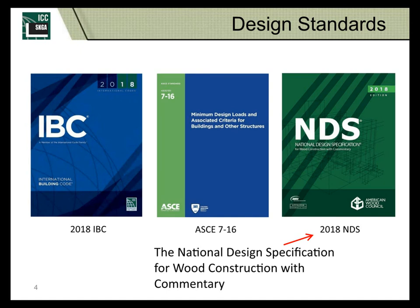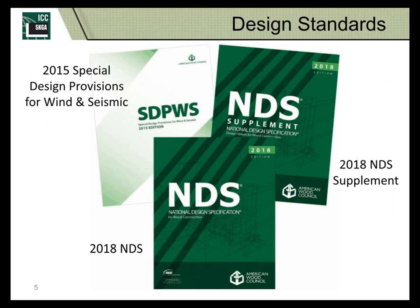We don't quite yet have the next edition of the IBC adopted by jurisdictions, but it's just around the corner. The NDS has three publications associated with it, beyond the code design itself. There's a supplement — the NDS Supplement — that has reference design stresses and section properties for a number of different wood types and shapes. We also have the Special Design Provisions for Wind and Seismic, which is the 2015 edition, still applicable since it wasn't updated for 2018.